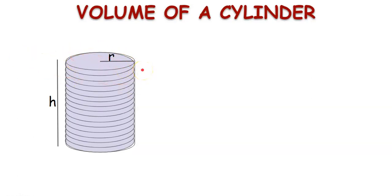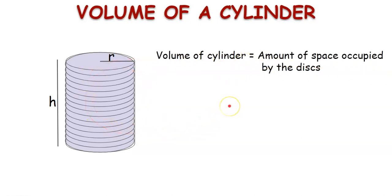We can observe that the volume of the cylinder is equal to the amount of space occupied by these circular disks. That is, area of each disk multiplied by height of the cylinder. That is nothing but area of the base times height.